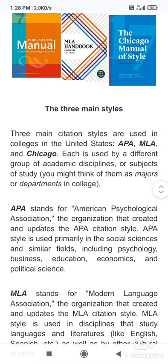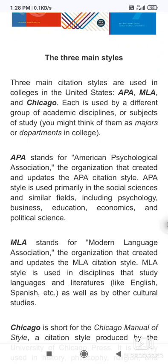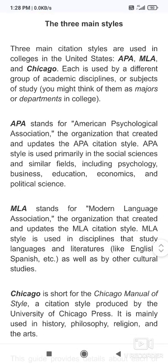There are three main styles of citation. We will see the first three main types: the first one is APA style, MLA style, and Chicago style. These three main citation styles are used in colleges, especially in the United States, given that each is used by a different group of academic disciplines.